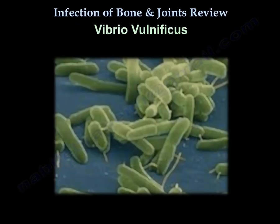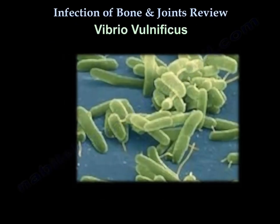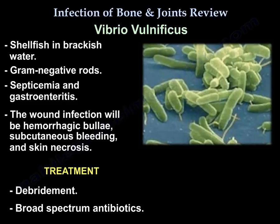Vibrio vulnificus — a gram-negative rod causing septicemia and gastroenteritis — is associated with saltwater and brackish water. The wound infection will be hemorrhagic, with bullae, subcutaneous bleeding, and necrosis. Treatment is debridement and broad-spectrum antibiotics.